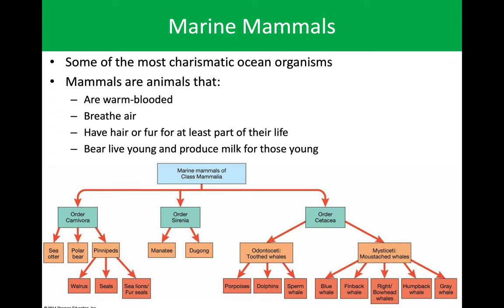Marine mammals are kind of what we refer to as our charismatic megafauna. When we want somebody to care about the ocean, these are really what we throw out there because they garner a lot of sympathy. We have three main classes: our carnivores like sea otters and polar bears; our sirenia, which are manatees and dugongs — kind of our weird creatures that we didn't really know where to place; and then finally our whales, broken down into toothed and baleen whales.